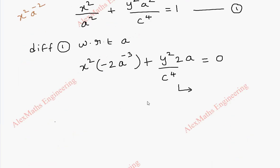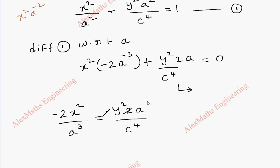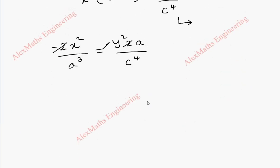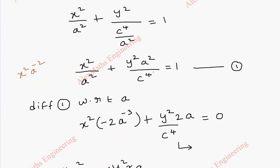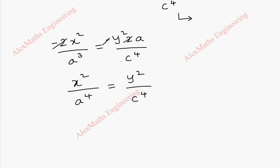We take terms to the other side: minus 2 x square by a cube equals minus y square times 2a by c power 4. We cancel minus 2 on both sides and bring the remaining a across, giving x square by a power 4 equal to y square by c power 4. Since the first equation has y square and a square, we rearrange so that both sides have a square, yielding a square on each side.